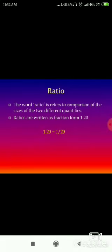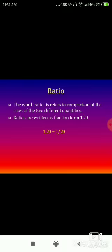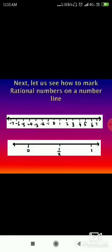The word ratio refers to the comparison of the size of two different quantities. Ratio is comparing two objects, two measurements — two things. Ratios can also be written in the form of fractions. For example, 1 to 20 is written as 1/20.